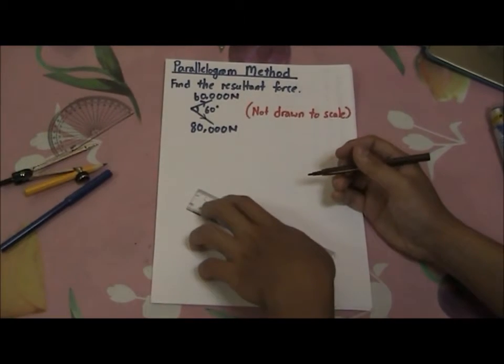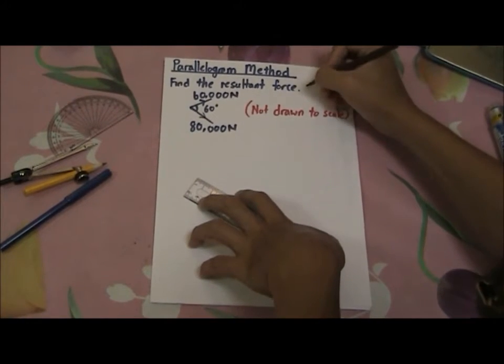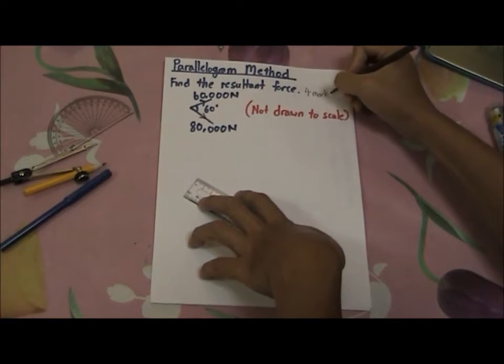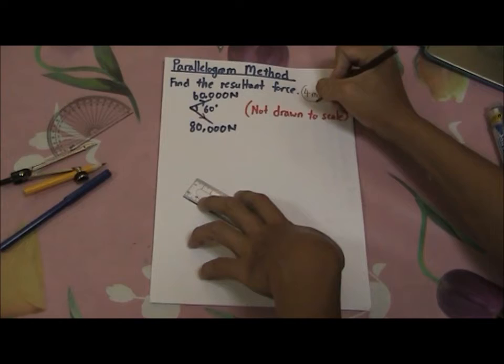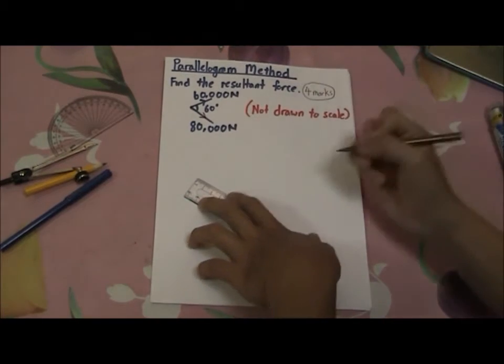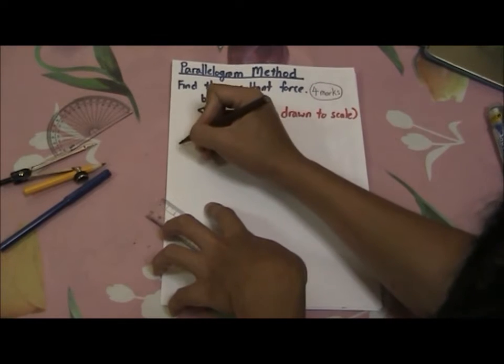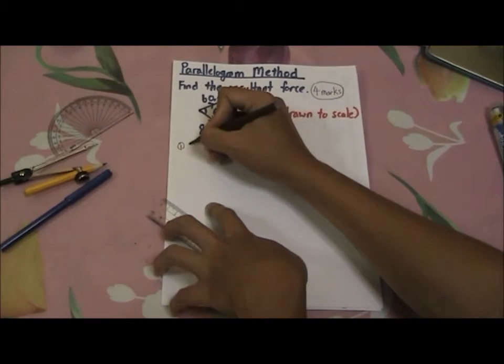This kind of question is a 4 mark question. So now I'll go through step by step to tell you where these 4 marks lie. First of all, the first mark lies in the scale.